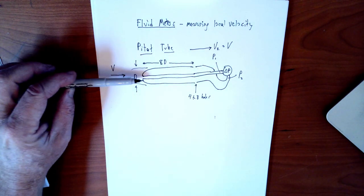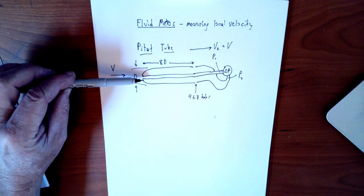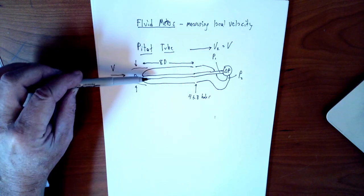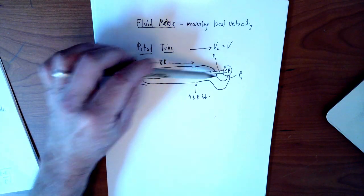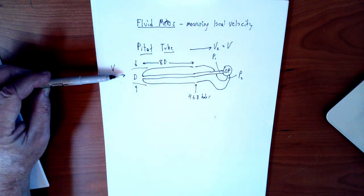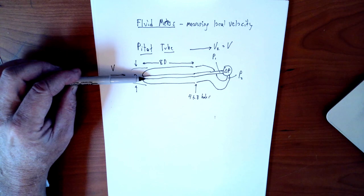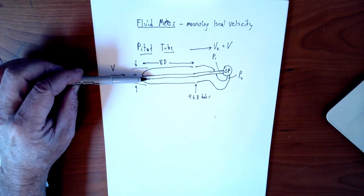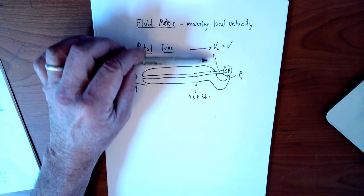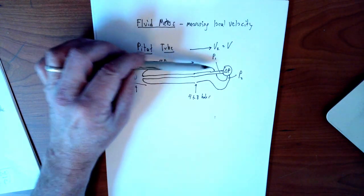The velocity coming in will enter this channel 1, and in this channel there's no flow, the flow can't go anywhere, it's stuck. So the velocity goes from whatever it was out here at the mainstream to zero, and that causes a significant pressure change.